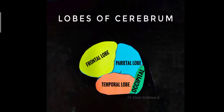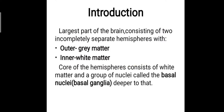Hi everyone, this is Dr. Manu Krishnan K and in this video we will be discussing about the external features of cerebrum. The cerebrum is the largest part of the brain, consisting of two incompletely separate hemispheres with an outer grey matter and an inner white matter. The core of the hemispheres consists of white matter and a group of nuclei called the basal nuclei or basal ganglia.